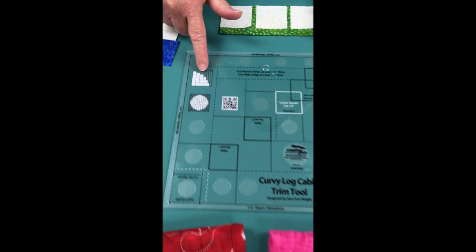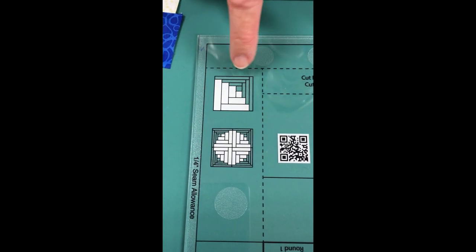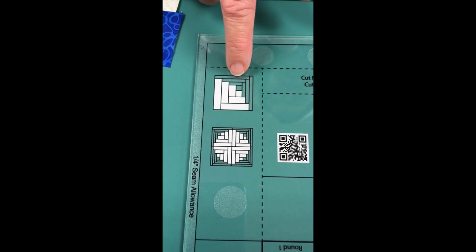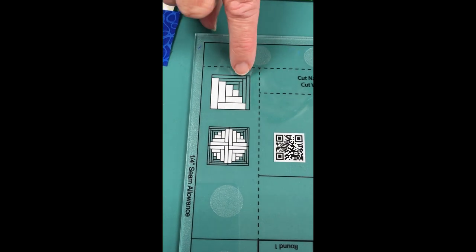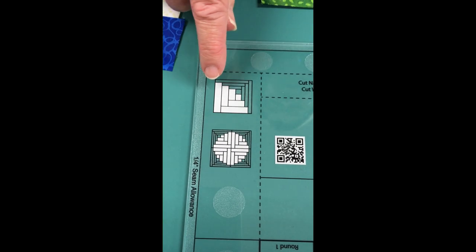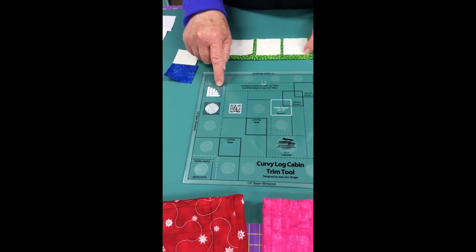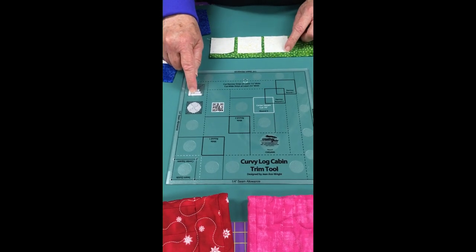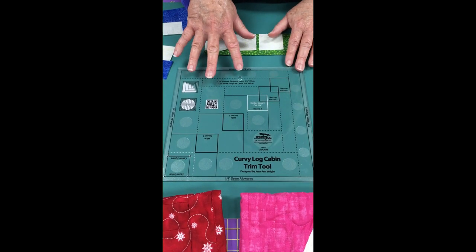The ruler shows two different block images so you can see what it makes. The curved effect in the Curvy Log Cabin comes from having a skinny side to the block and a wider side. That's what creates the illusion of the curve.